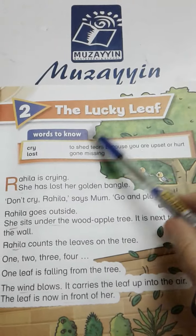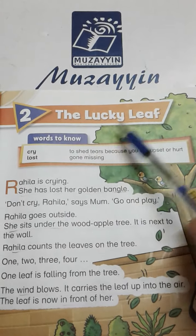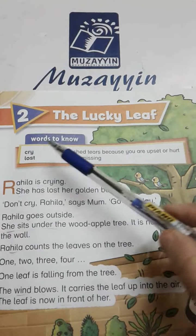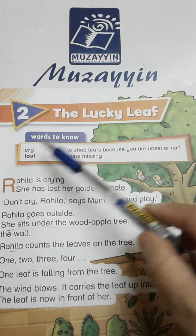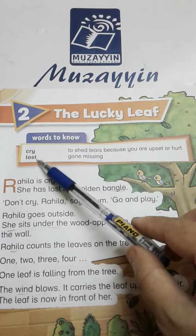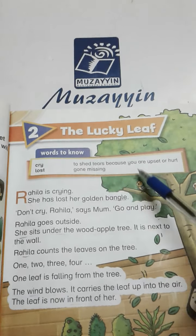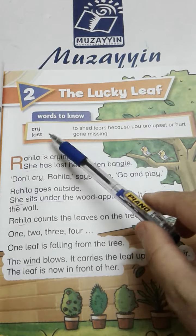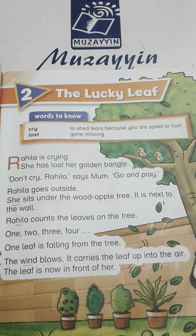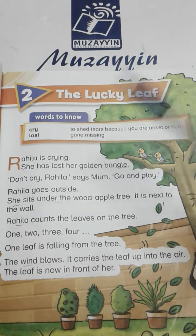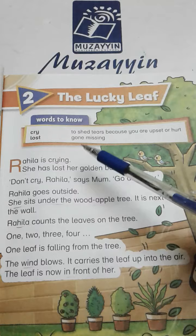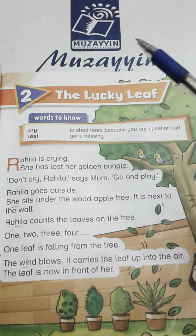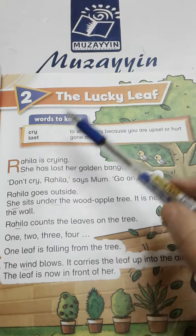Unit Number 2: The Lucky Leaf. Lucky leaf کہتے ہیں خوش نصیب پتے کو — now we will see what this lucky leaf is. Words to know: 'Cry' means to shed tears because you are upset or hurt. Cry کا مطلب ہوتا ہے رونا — when you are hurt and tears come from your eyes, that is called 'cry.'